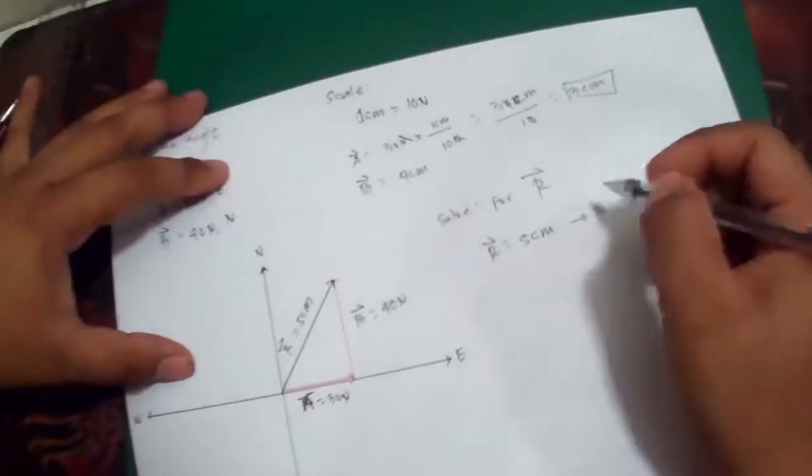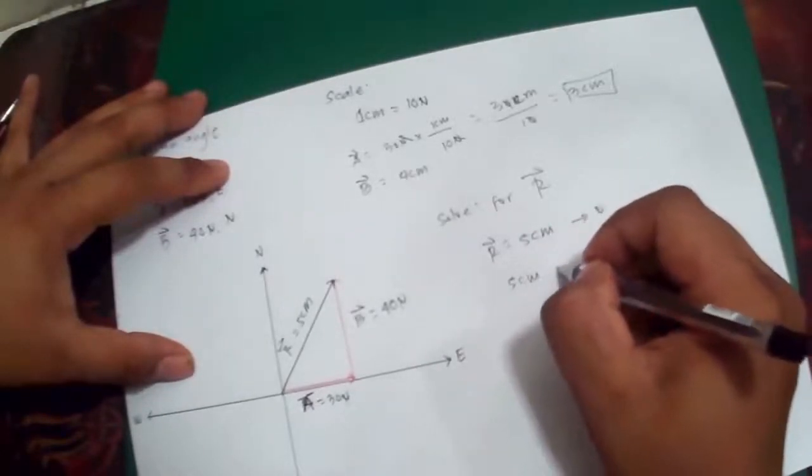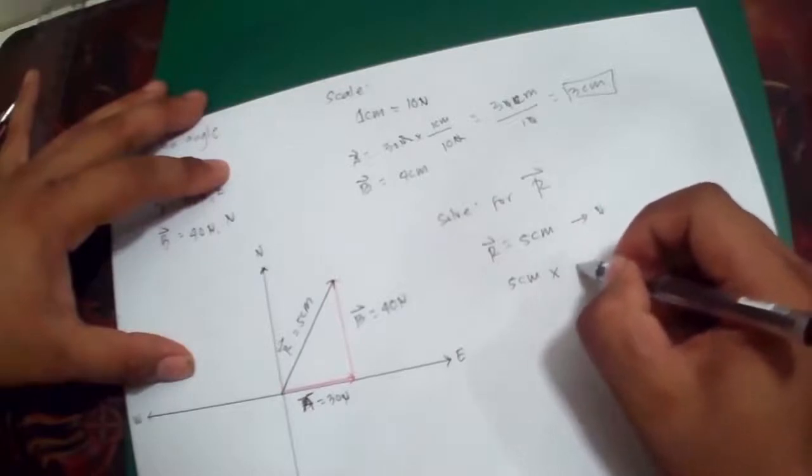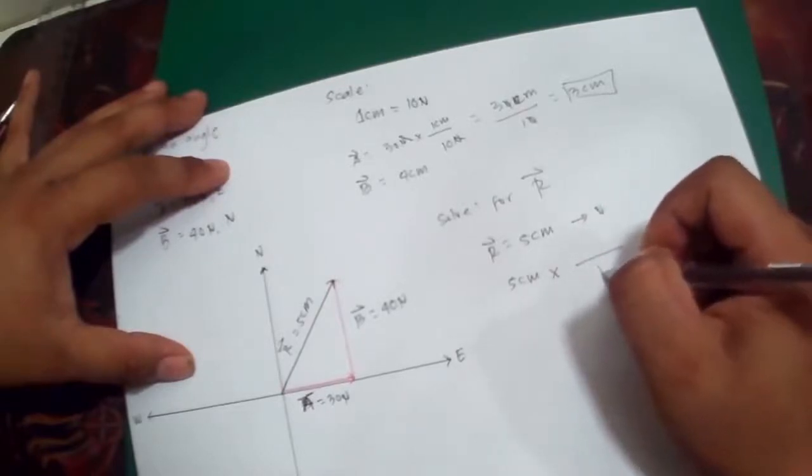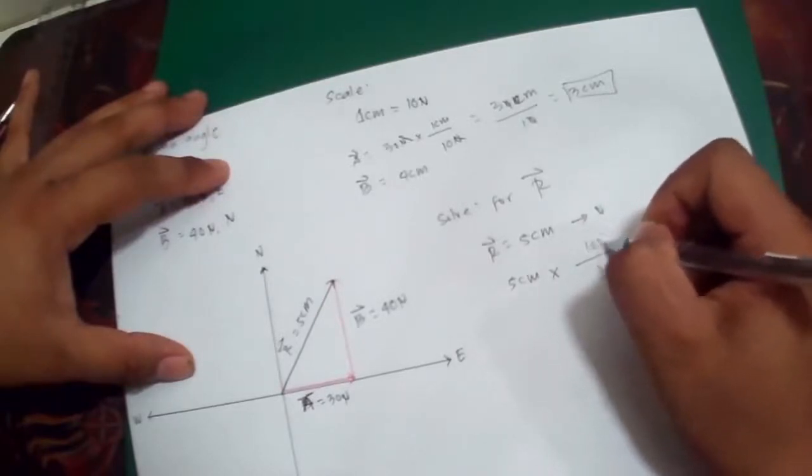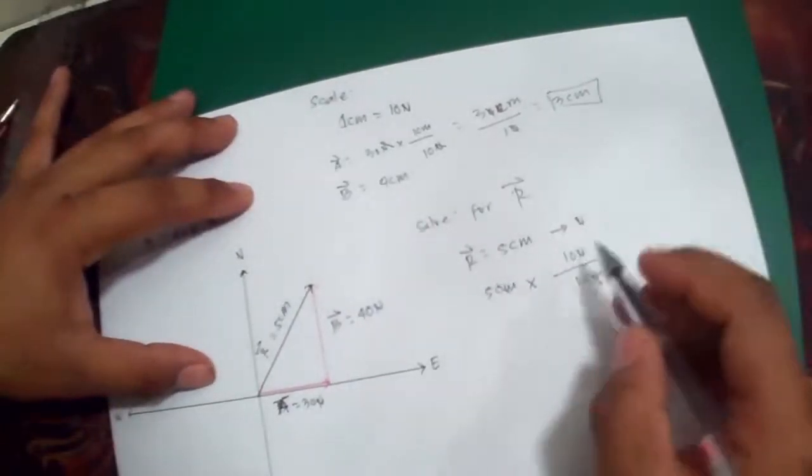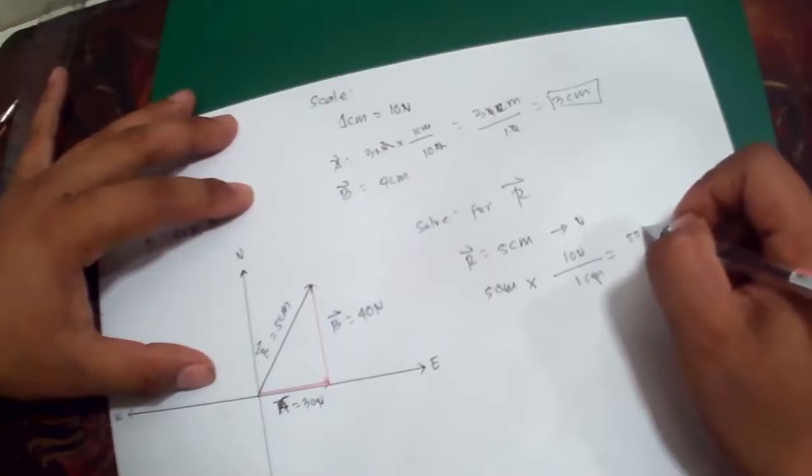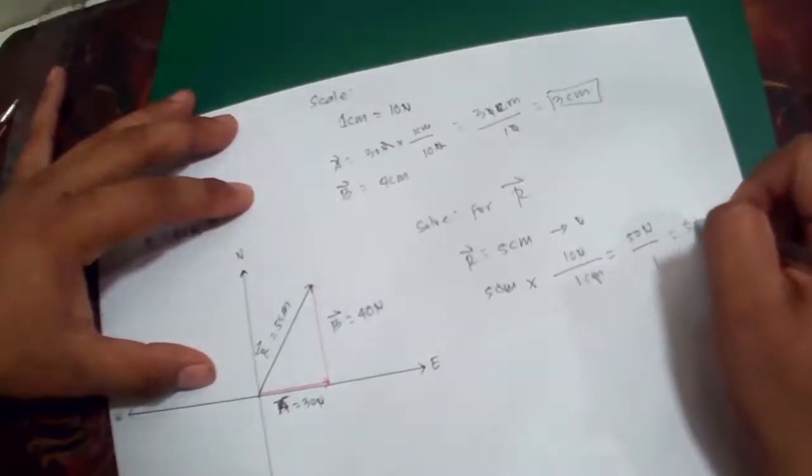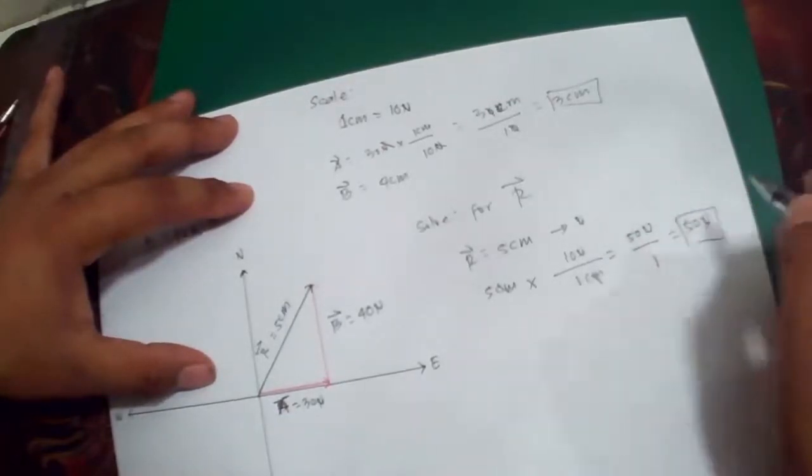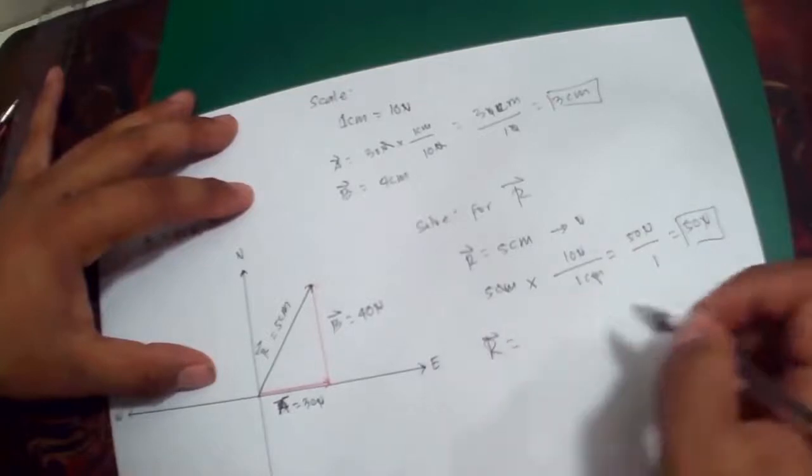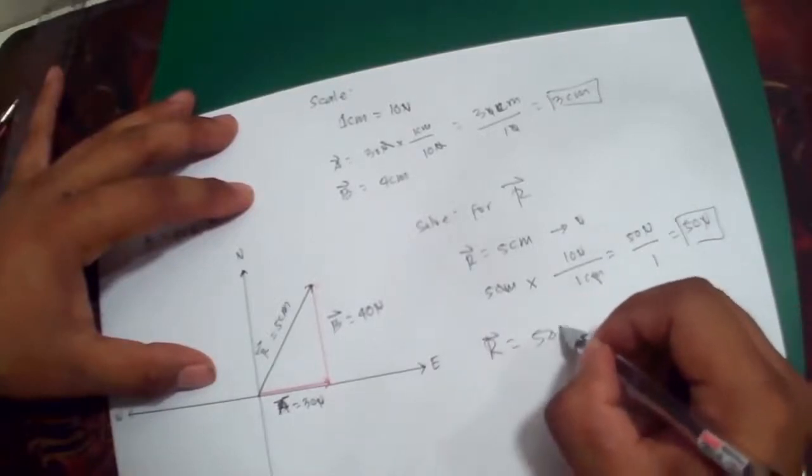Convert this one into newtons. 5 cm times, in every one centimeter we have 10 newtons. Cancel out. 5 times 10 will give you 50 newtons over 1. That would give you the same result, 50 newtons. So the resultant vector here is 50 newtons.